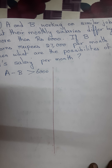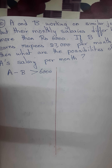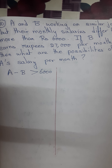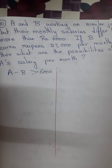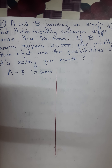There are 2 persons A and B. They are not getting the same salary — they are getting different salaries — but they didn't tell who is getting more and who is getting less. They have told clearly that the difference between the salaries is Rs. 6,000. B's salary is Rs. 27,000 per month. You have to find out the range of A's salary.